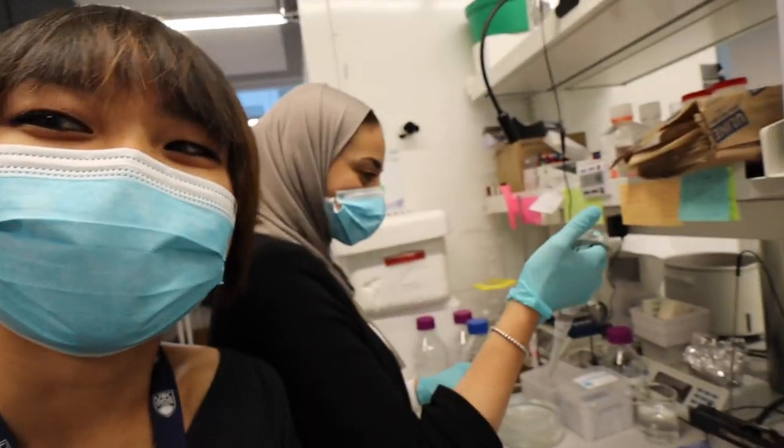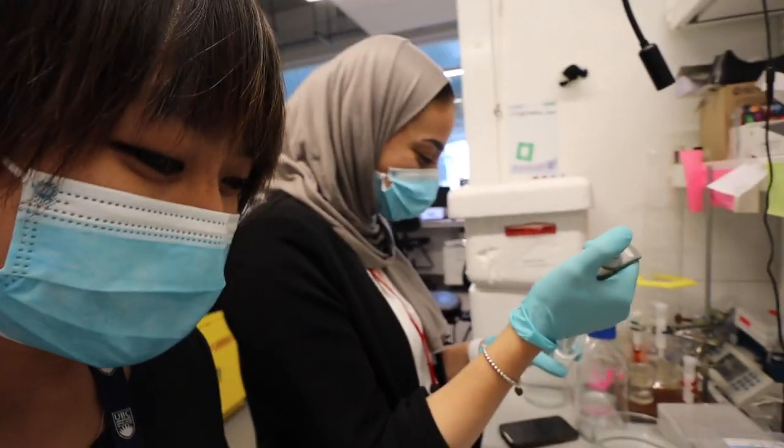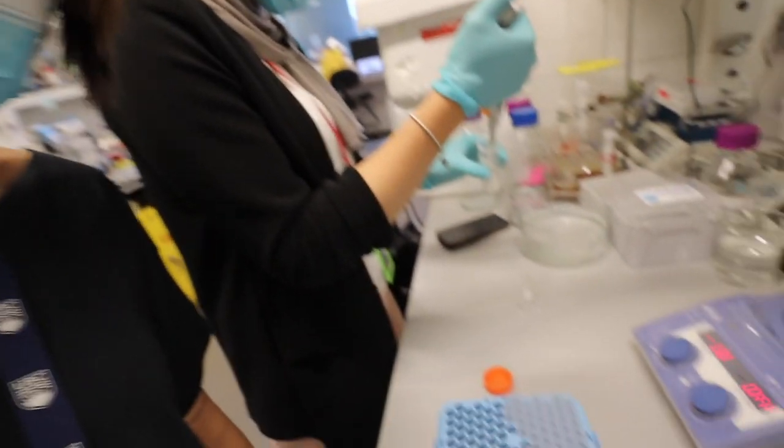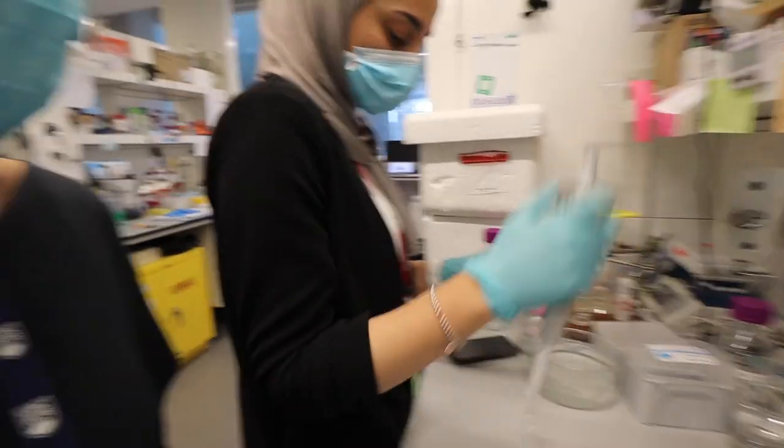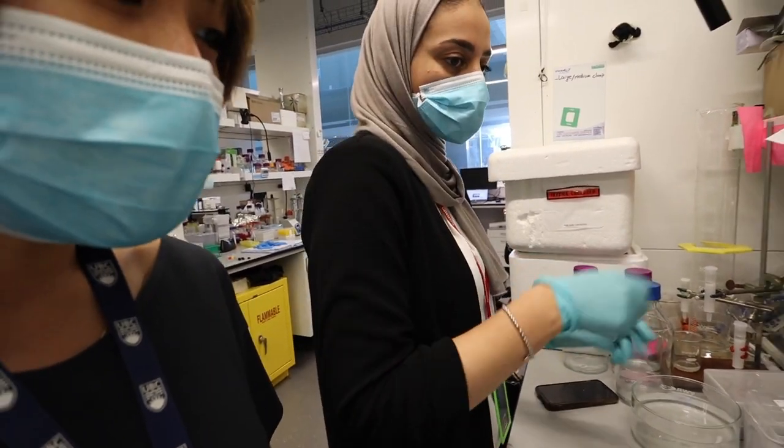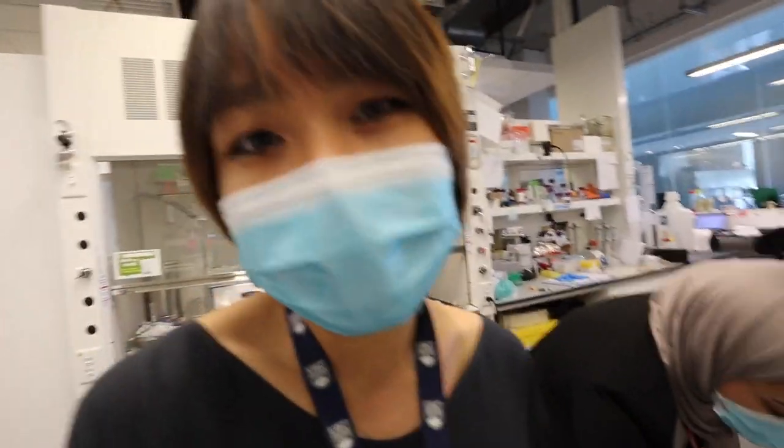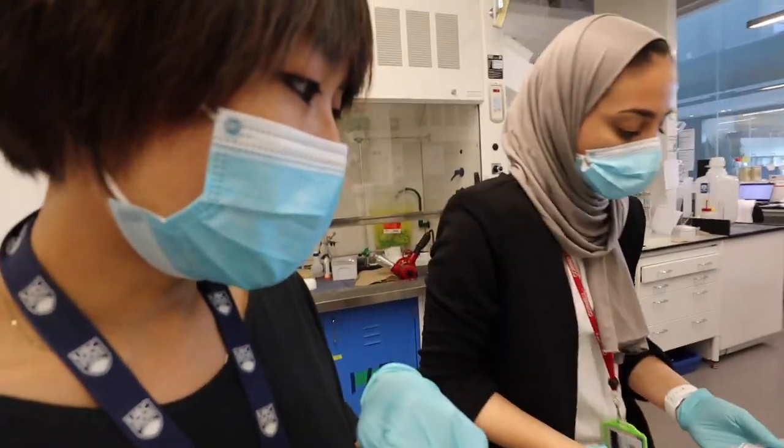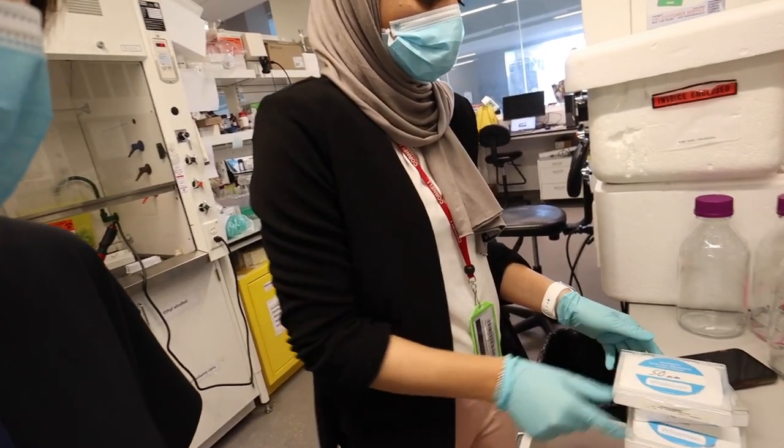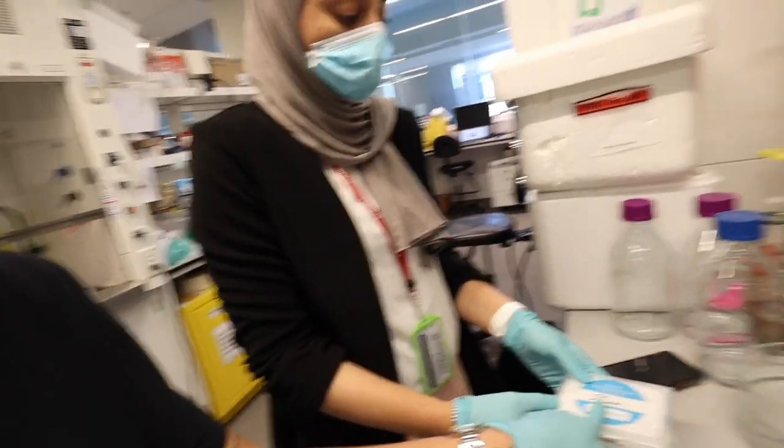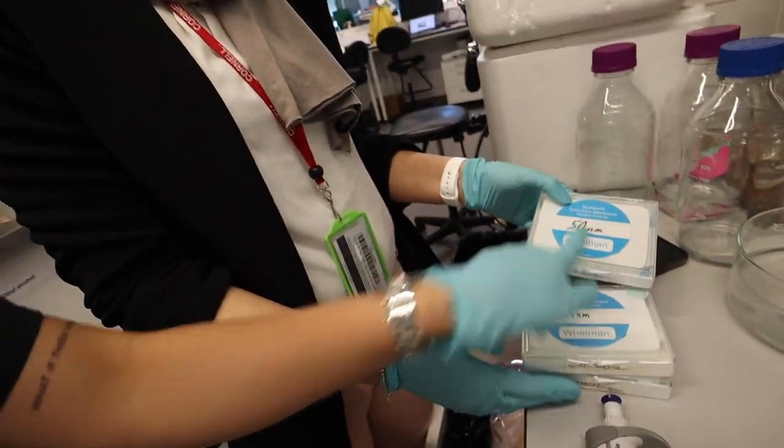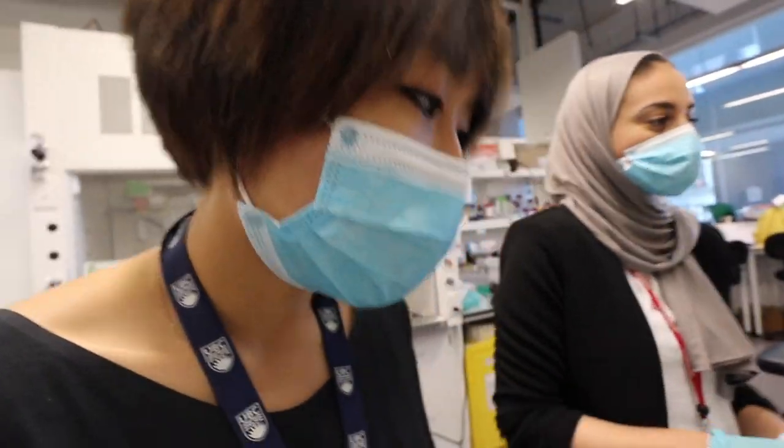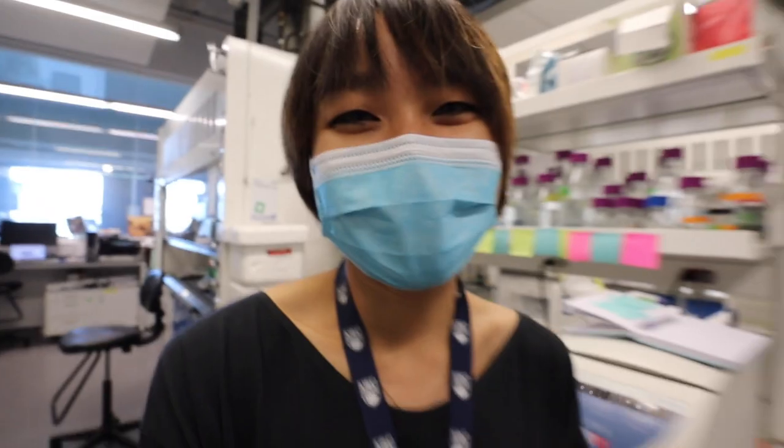We're back from lunch and we are now going to do Noju's favorite thing, which is called extrusion. So first she is hydrating it in the buffer. The process of extrusion is just pushing the lipid mixture through membranes, right? To force it to form nanoparticles. We have to go through three membranes, three different size membranes from biggest to smallest. Right? I'm really afraid because Noju seems to hate this a lot, so I think I would hate it too. But it's okay, we're doing it together.